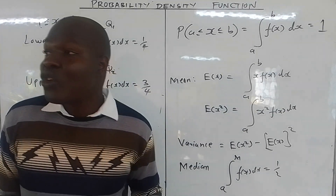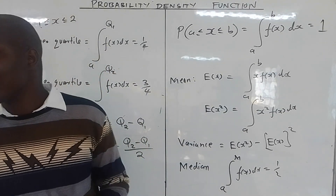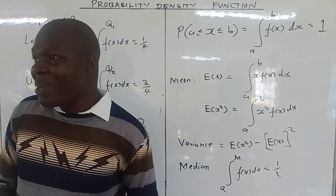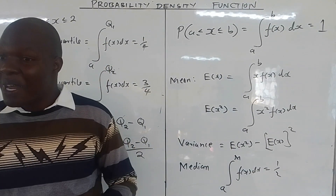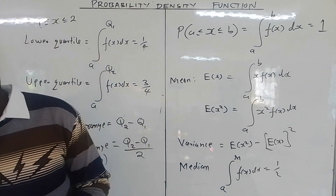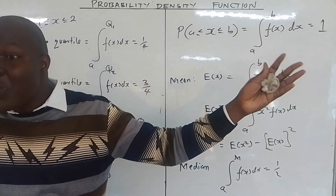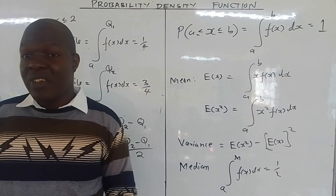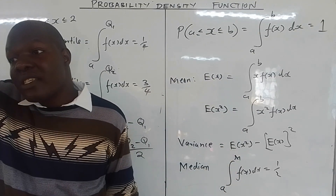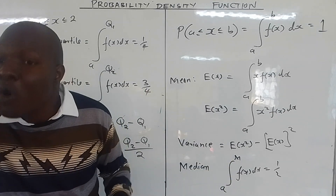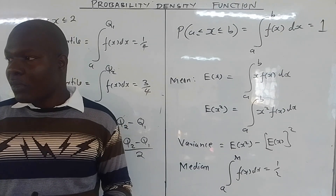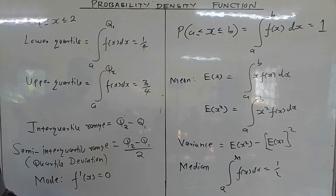In many cases the mode will concentrate either on the lower limit or the upper limit. So it is always good to test the lower limit by substituting it into the function, and test the upper limit by substituting it into the function, then check which one gives you the maximum value. That maximum value tells you which x value is the mode — the x value you substituted, not the maximum value itself, is the mode.